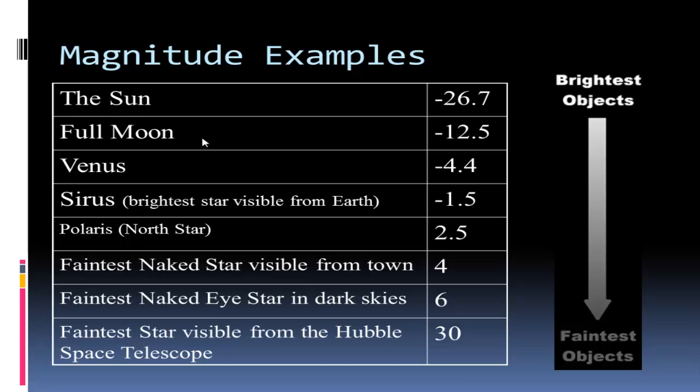Hipparchus would have originally had this as a one, but when we hook a sensor up to our telescopes that measures photons of light from a given star, Sirius is the brightest. Polaris, which a lot of students will say is the brightest star, would be 2.5 - actually the 10th brightest star. If you're in town you can see down to a four, but in the darkest perfect skies with no clouds or light pollution, you can see a six on the magnitude scale. This is the limit for the human eye.